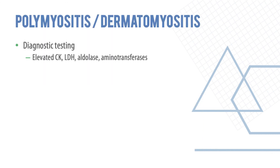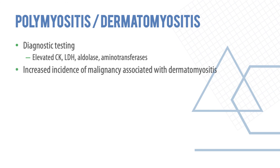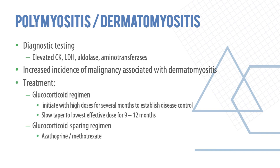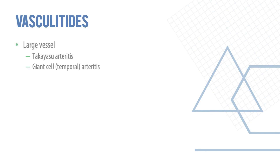Testing includes elevated CK, LDH, aldolase, and aminotransferases. There is an increased incidence of malignancy with dermatomyositis. Treatment is initially high-dose glucocorticoids for several months to establish disease control, slowly tapered to avoid side effects, with treatment most effective over about 9–12 months. Glucocorticoid-sparing regimens using azathioprine and methotrexate can be used in certain patients. Vasculitides can be large, medium, or small vessel diseases and will be discussed in another video.